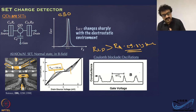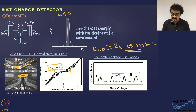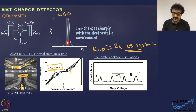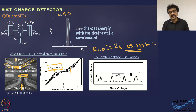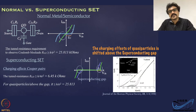This is the situation for a normal state single electron transistor. The key point is that the sharp change in conductance through the device as a function of a very small change in the electric field or potential in the vicinity of the device is utilized for detecting charge motion.